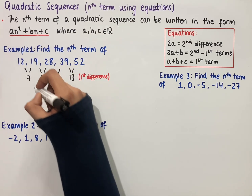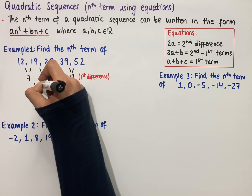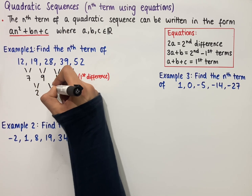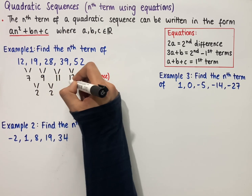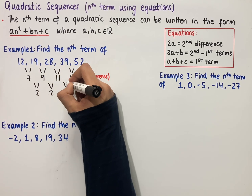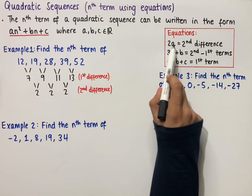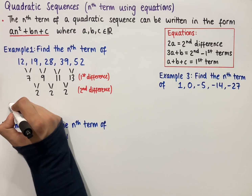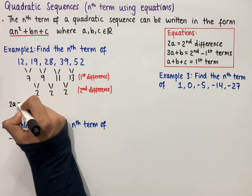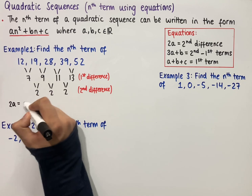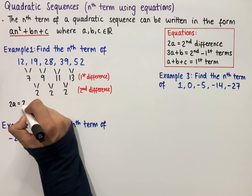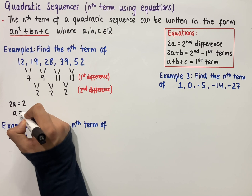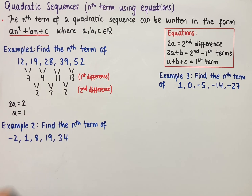We now work out the second difference: 9 minus 7 which is 2, 11 minus 9 which is 2, 13 minus 11 which is 2. And so using the first equation we have that 2a equals the second difference, in this case 2. And so if we solve this equation we end up with a equals 1.